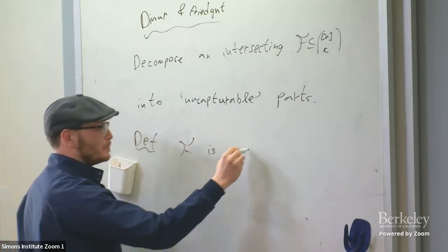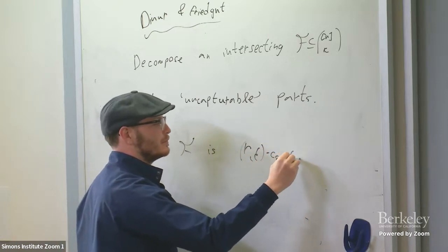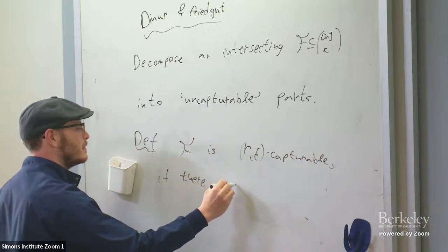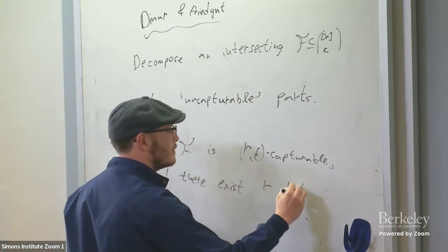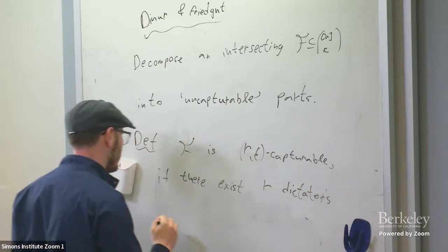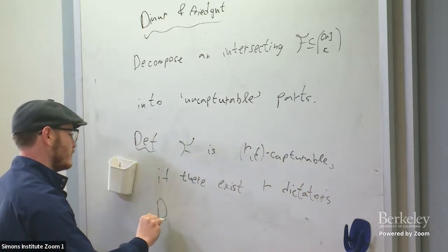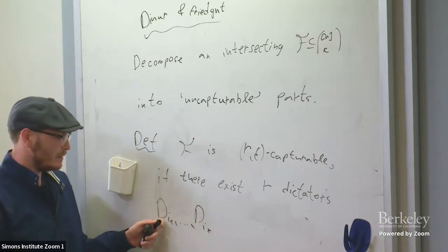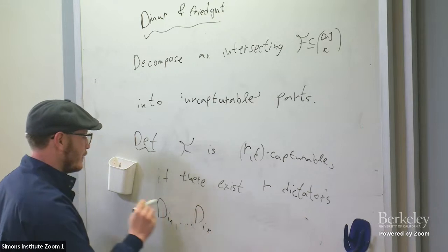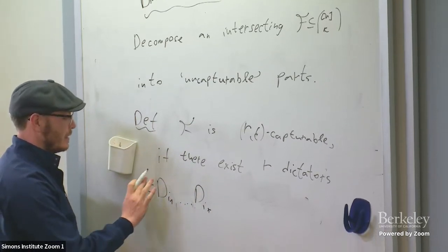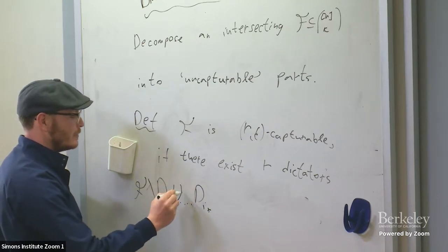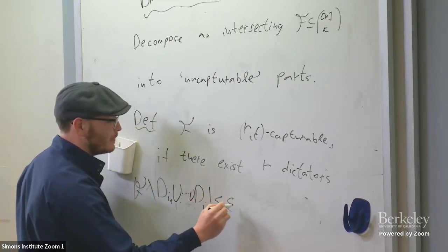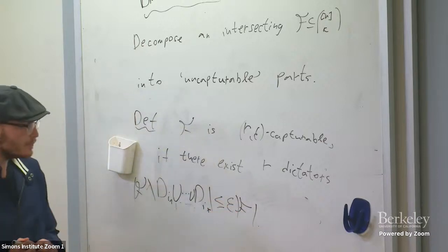F is R-epsilon-capturable if there exist R dictators D_{i1} up to D_{iR} — families of all sets containing i_1, etc. — such that F is essentially contained in their union: if we count how many elements of F are outside the union, we get almost nothing, at most epsilon times the size of F.